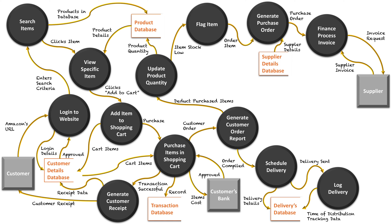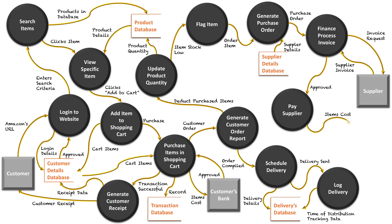The purchase order is sent to the finance department, who process the invoice and make the request to the supplier. The supplier sends back an invoice stating how much it will cost. At this point, the finance department approves it if the price is fair — otherwise they may seek a different supplier. Once approved, they pay the supplier by contacting Amazon's bank. The bank approves it, the supplier gets paid, Amazon receives a receipt, and that transaction is stored in the supplier's database with the amount paid and the date.